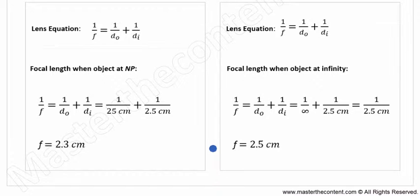Now, let's go ahead and compare our answers. As we see here, the focal length is shorter when the eye focuses on an object at the near point. Intuitively, this should make sense.